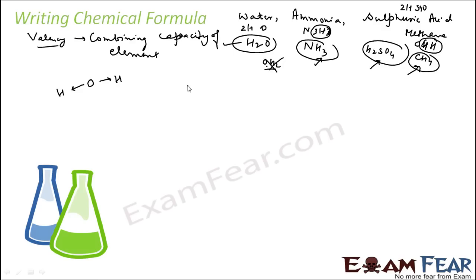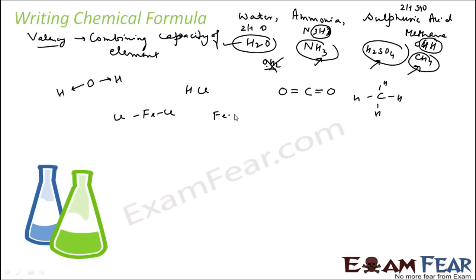For example, carbon in CO2 has four hands — two hands bind one oxygen and the other two hands bind another oxygen. Some elements show more than one valency; for example, iron sometimes binds with 2 chlorines and sometimes with 3 chlorines. We will explain this in higher classes based on the stability of a particular atom.